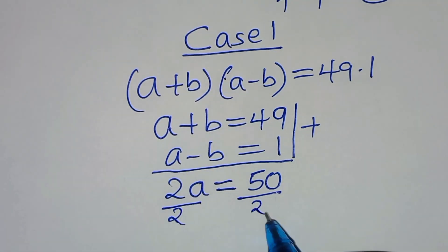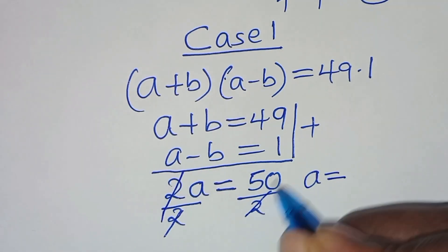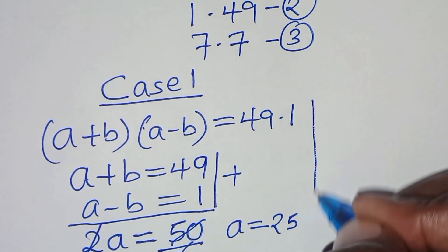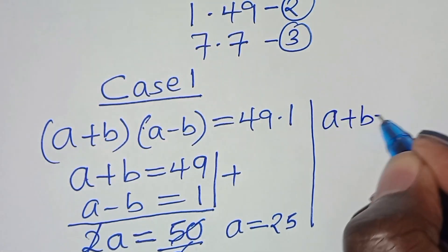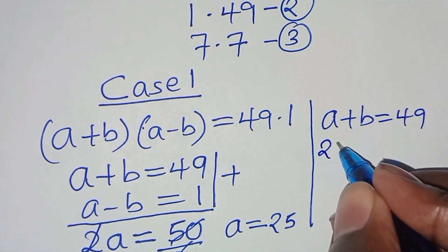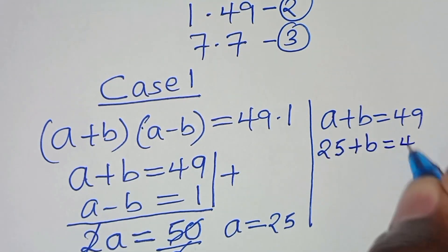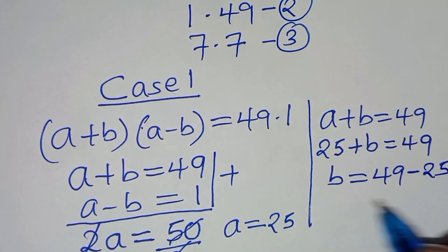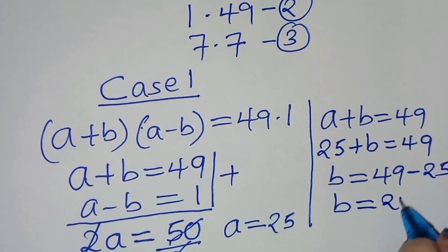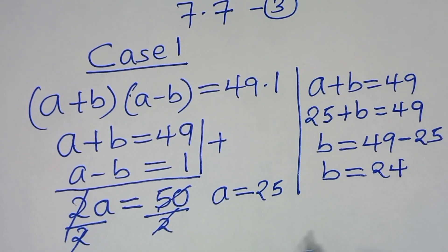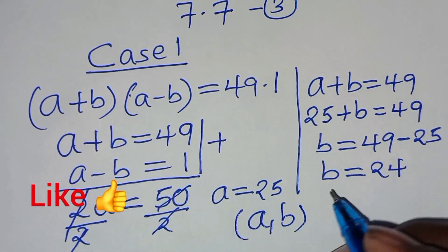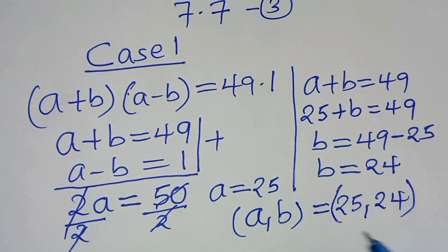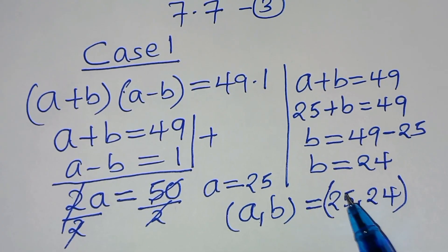Dividing by 2, a = 25. To solve for b, using a + b = 49 and substituting a = 25, we get 25 + b = 49, so b = 49 − 25 = 24. The first solution set is (a, b) = (25, 24). These are natural numbers, so this solution is valid.